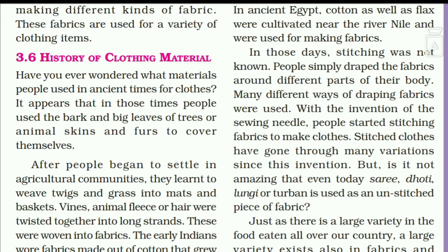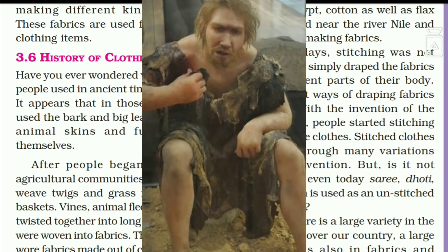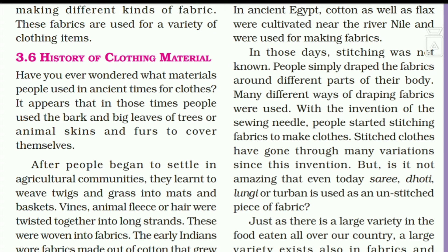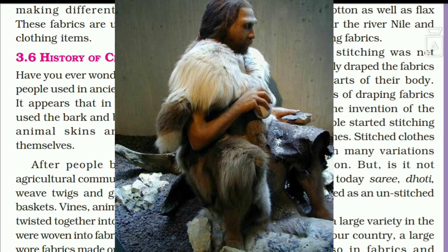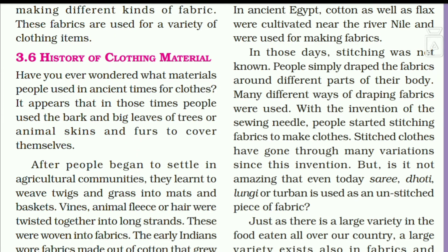In ancient times, what kind of clothing did people use? Today we wear jeans, dresses, churidaar, saree, pants, shirts. But in ancient times, the first thing that comes to mind is that they used leaves, or animal skins. They used to use leaves, fur, and animal skins — for example, rabbit fur, or other soft furry animals like yak. Those soft animal furs were used as clothing.